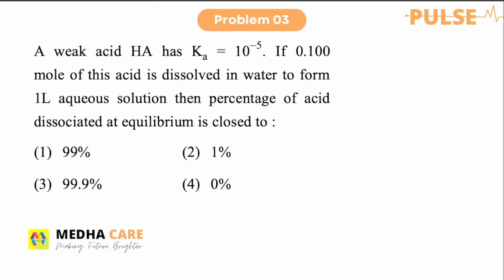Let us see problem number 3. A weak acid HA, the Ka value 10 to the power minus 5. And the concentration of the acid is also given. We have to find out the dissociation, percentage dissociation of the acid.